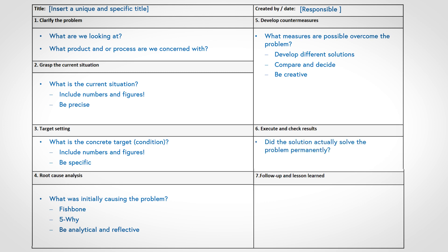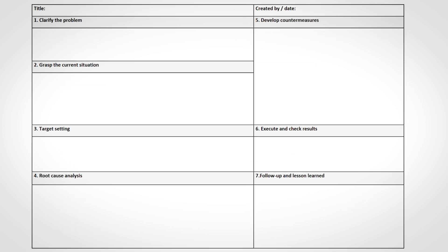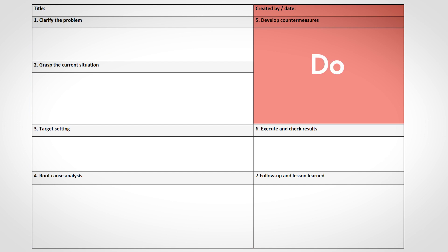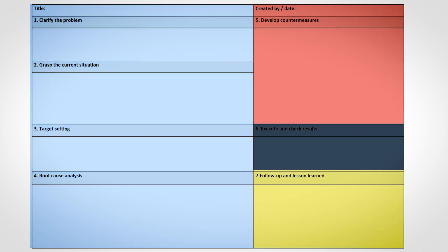Step six then executes the chosen solution and analyzes whether the problem is solved. Finally, the last step recaps what we learned from going through the problem-solving cycle of the A3. This step is crucial to manifest the knowledge gained from the process. Looking closer, these seven steps show that the A3 is aligned with the PDCA: the first four sections correspond to the Plan phase, the development of countermeasures is connected with the Do phase, step six corresponds to the Check phase, and follow-up and lessons learned resembles the Act phase. Hence, the A3 emphasizes and ensures the logic of the PDCA cycle is followed.